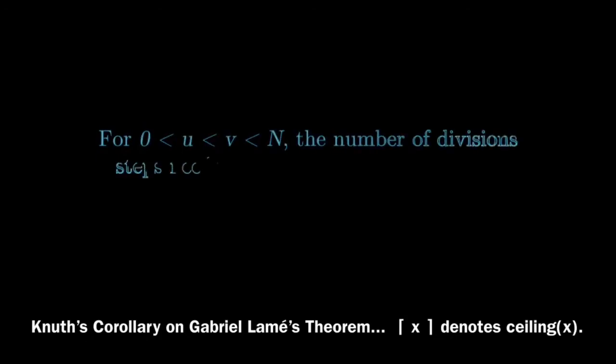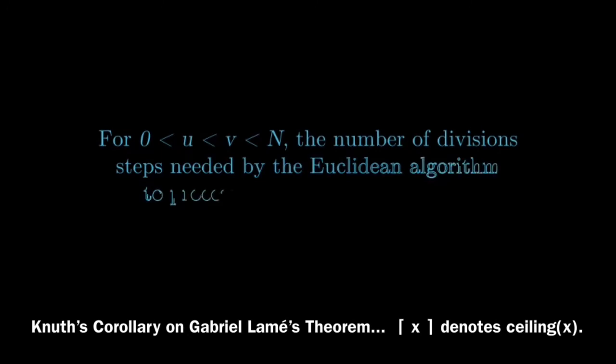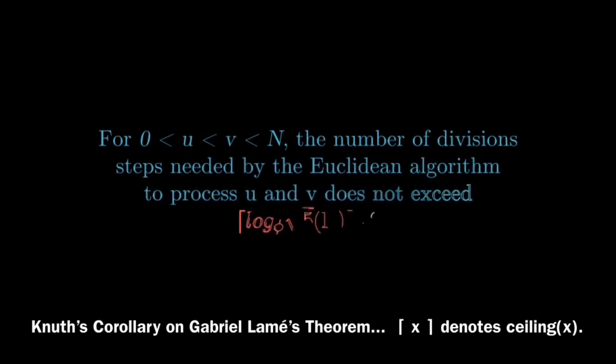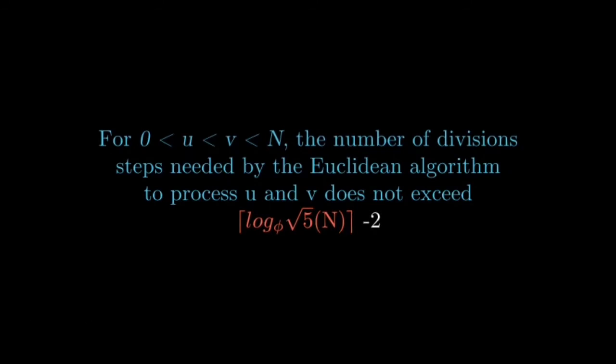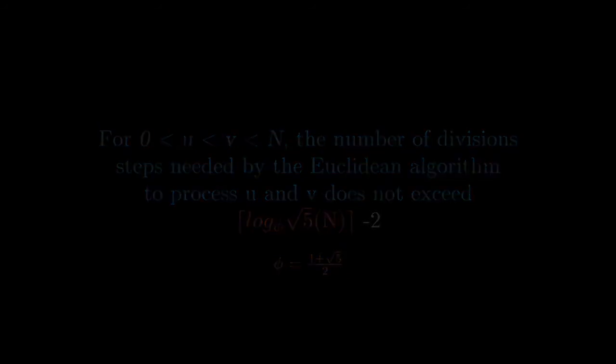A corollary of the theorem, proved by Knuth, tells that for 0 less than u less than v less than n, the number of division steps needed by the Euclidean algorithm to process u and v does not exceed c log to the base phi of root 5 n minus 2. It sounds quite sophisticated. Here, phi refers to the golden ratio. As a matter of fact, the estimate in Lamé's theorem is the best possible. That is, we cannot replace the number 5 in the theorem by any smaller integer.